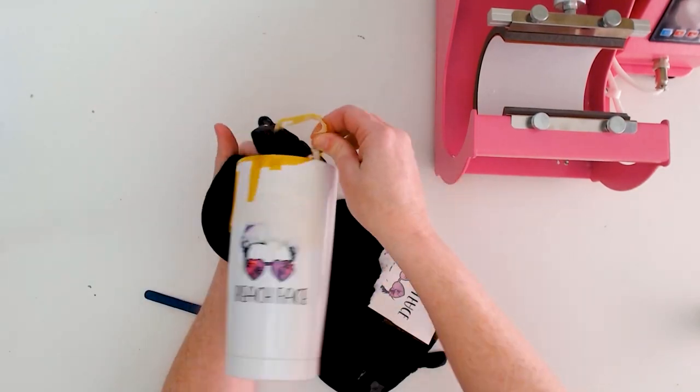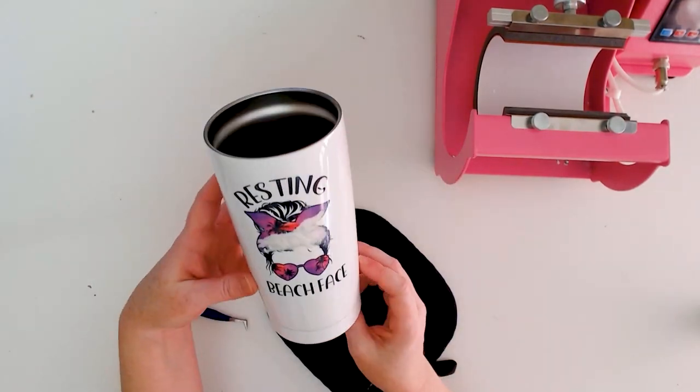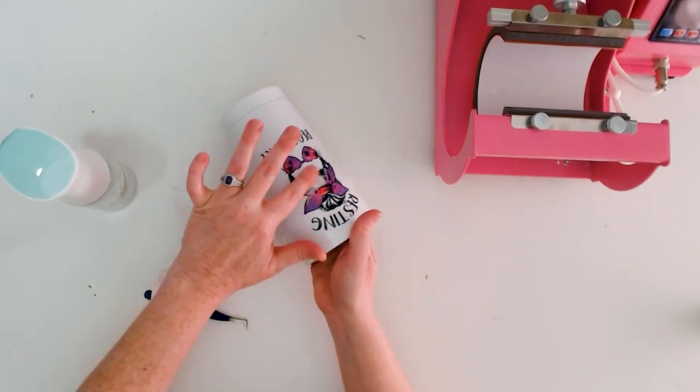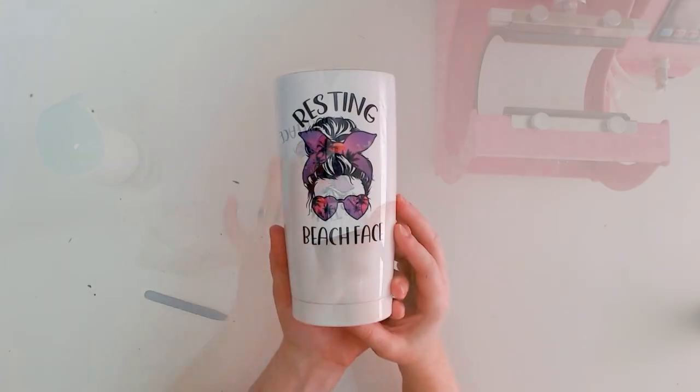After pressing, carefully remove the sublimation paper. If you've got some sublimation paper still left on the mug, then you can just use some water and your finger to rub it off. Unplug the machine when not in use and store the mug press open.